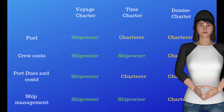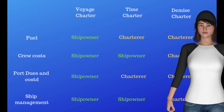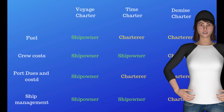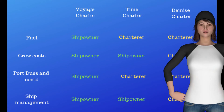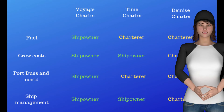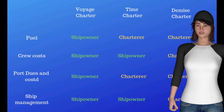Question: Explain Charter Parties. Answer: A charter party is a contract by which the owner of a ship lets it to others for use in transporting a cargo. The ship owner continues to control the navigation and management of the vessel, but its carrying capacity is engaged by the charterer.